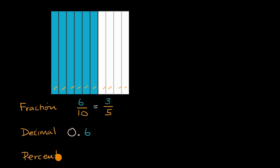Now what about a percentage? Percent means per hundred. So six over ten is the same thing as what per hundred? If we multiply the numerator and the denominator by ten, that's the same thing as sixty per hundred. Or another way of thinking about it, sixty per cent. So this would be equal to sixty percent.